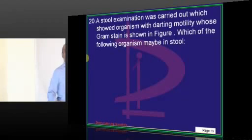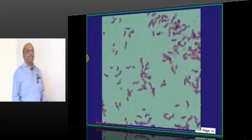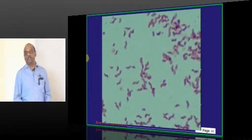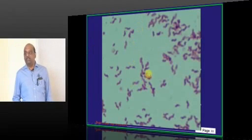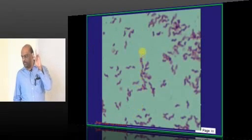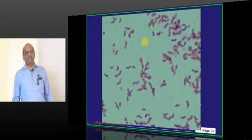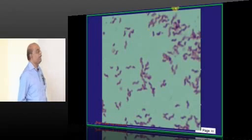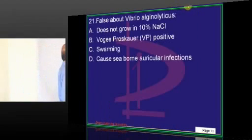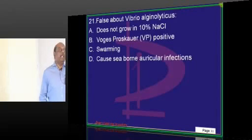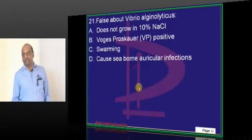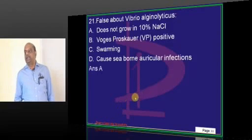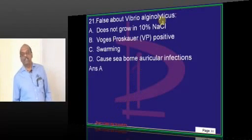There is a darting motility of a Gram-stained organism shown here, which is classical of Campylobacter. Darting motility is seen in two organisms: Vibrio cholerae and Campylobacter jejuni. Regarding Vibrio alginolyticus, it is a halophilic organism, which is the reason it grows very well in 10% salt solution.